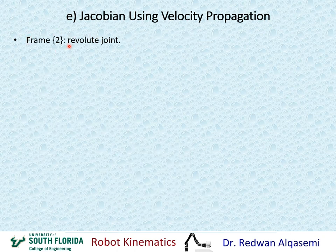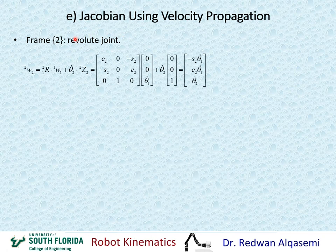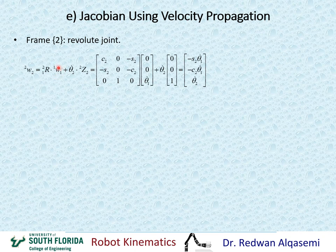Now we go to frame 2, which has a revolute joint, so we have to use revolute joint equations to find the angular and linear velocities at that frame. For the angular velocities of frame 2 relative to frame 2, we use R2,1, which is the transpose of R1,2 from the transformation matrix, and this is multiplied by omega 1,1, which we found from the previous step — it was 0, 0, theta 1 dot.